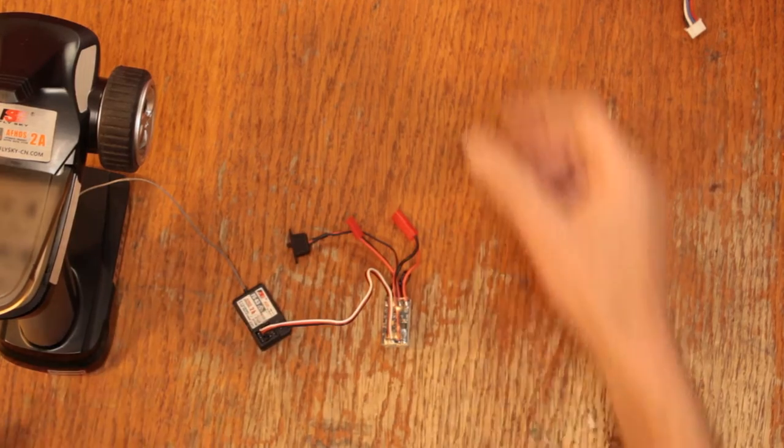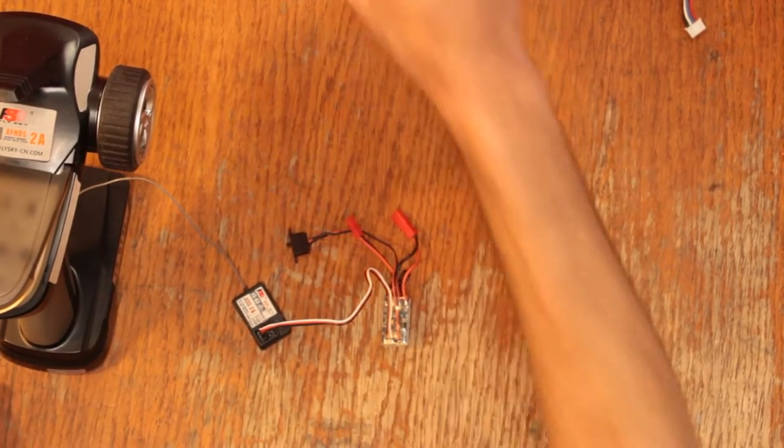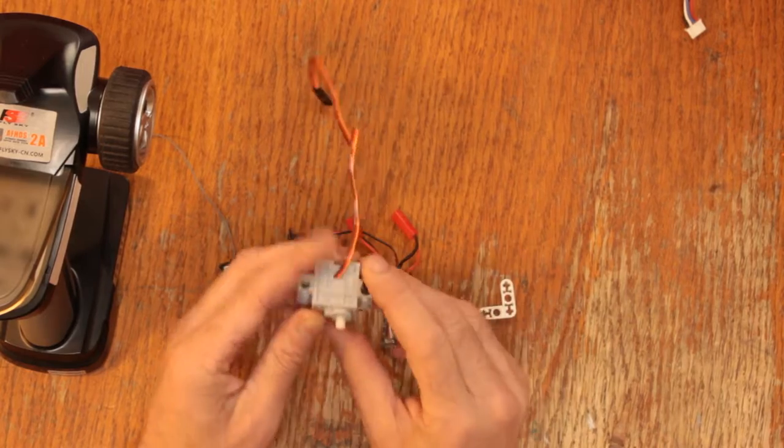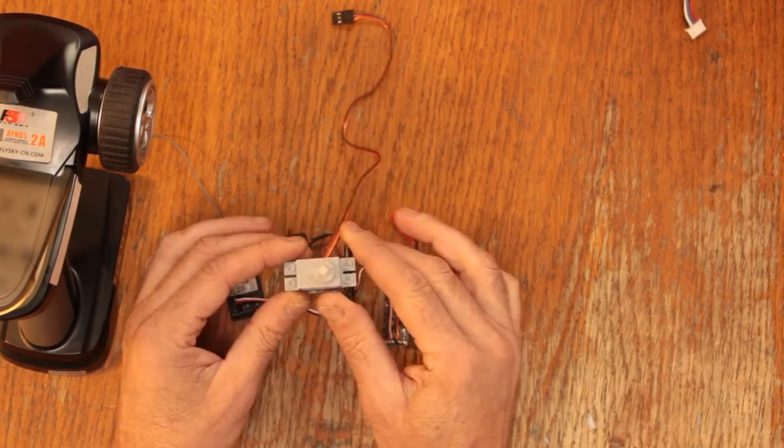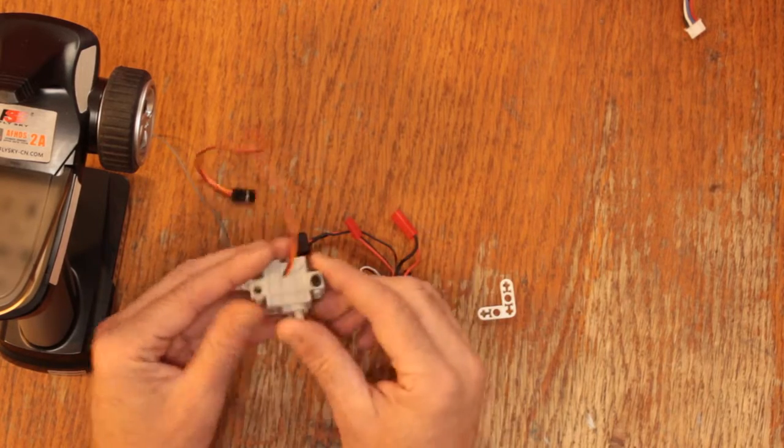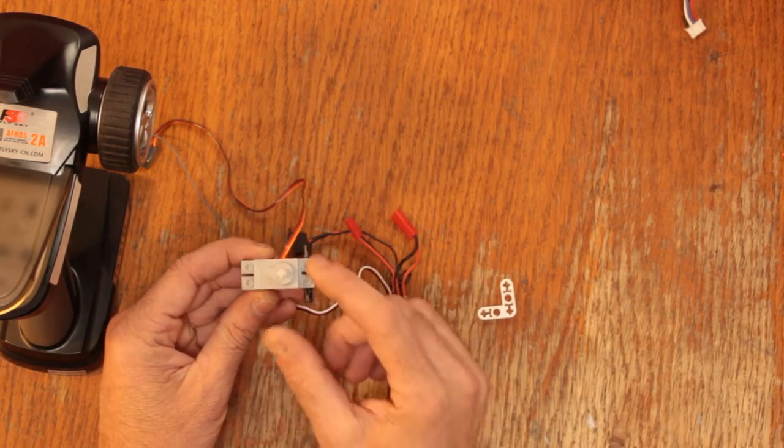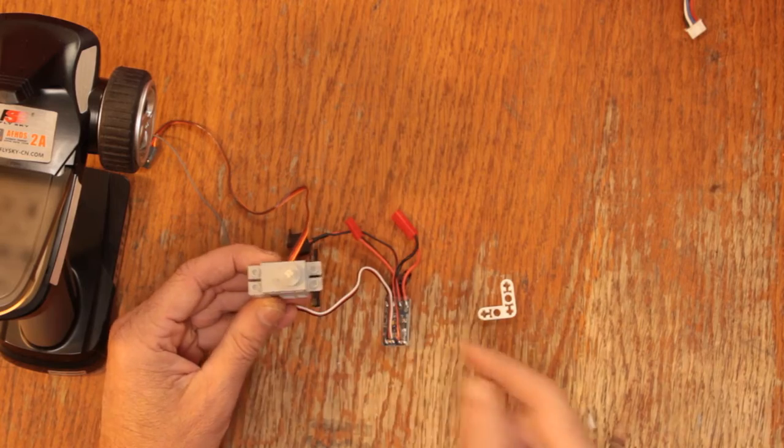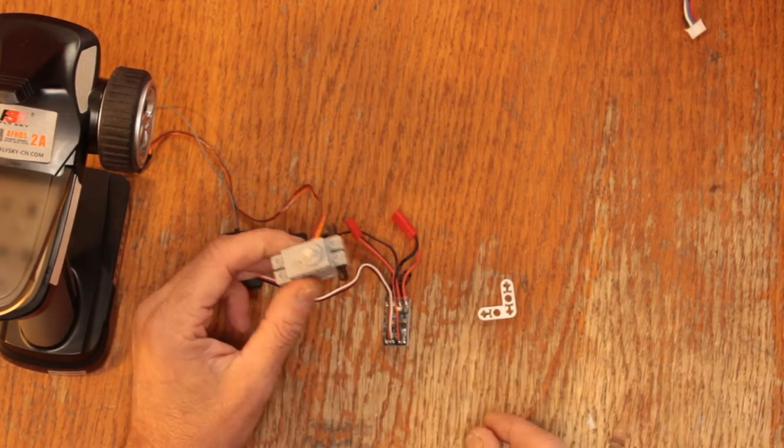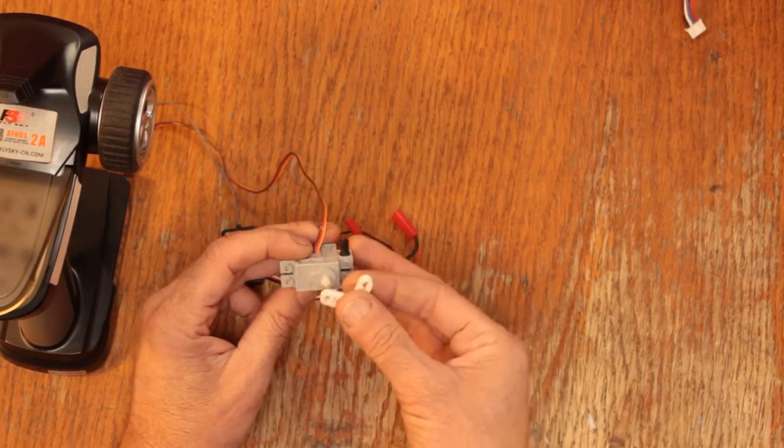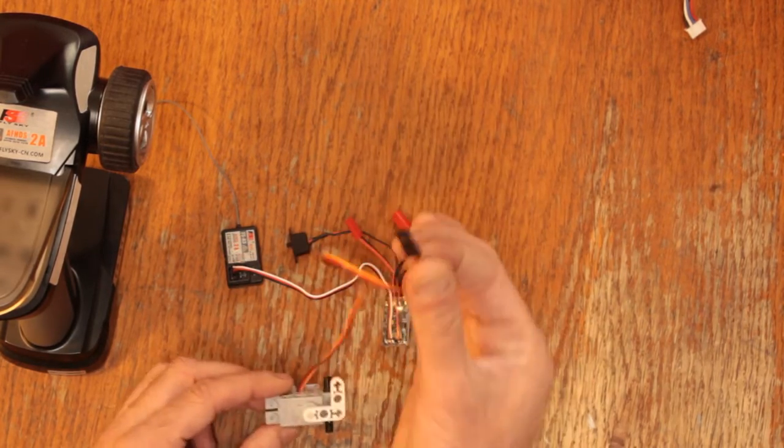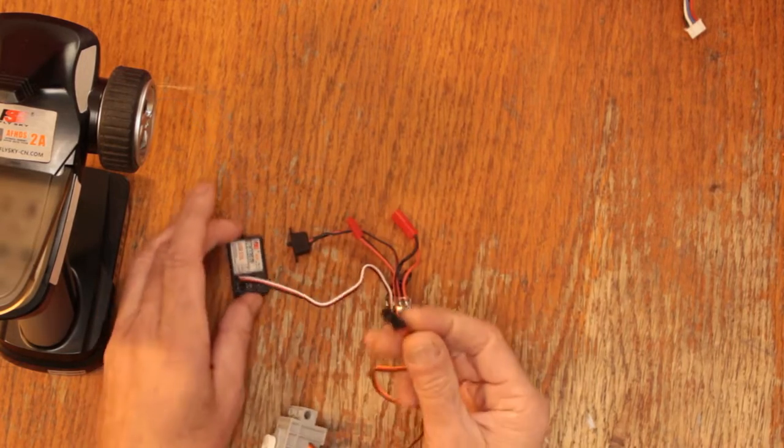Now the next thing we're going to need is a servo and I found these sort of LEGO compatible servos here. They have some LEGO Technic holes and they have some regular LEGO pegs there and a Technic peg to receive the servo actuator and then they take a regular servo PWM signal so you can use that with this radio here.